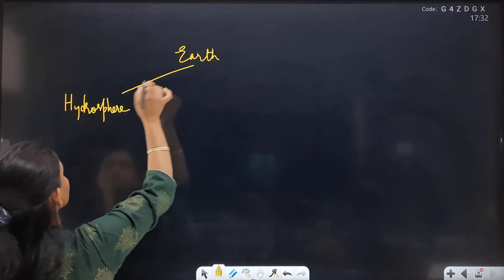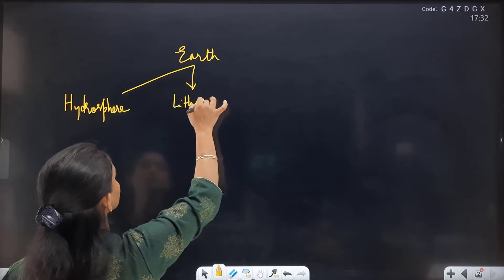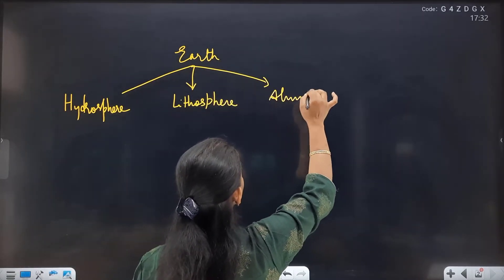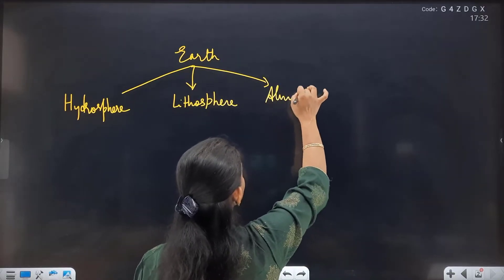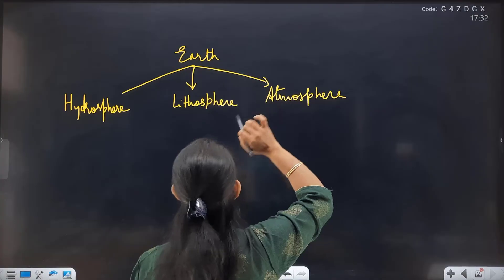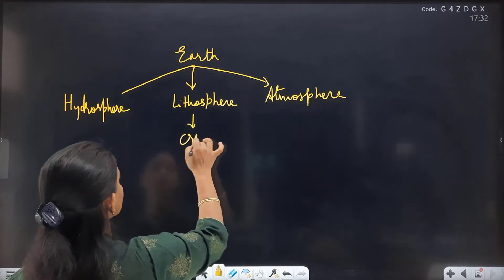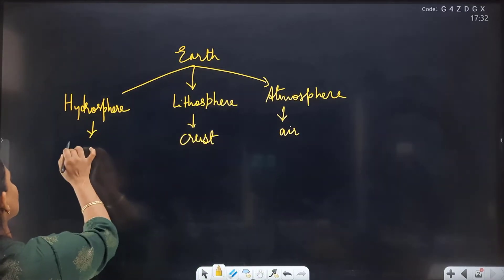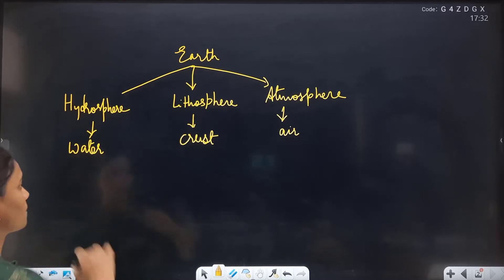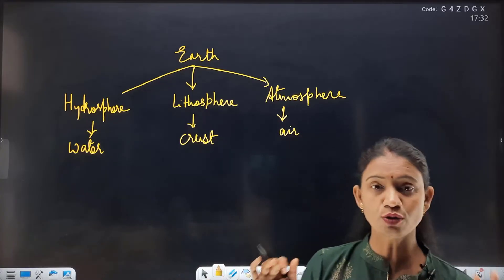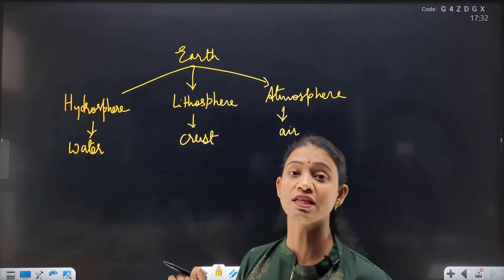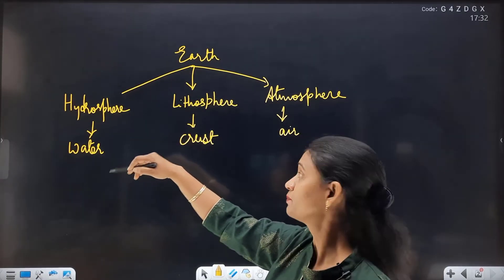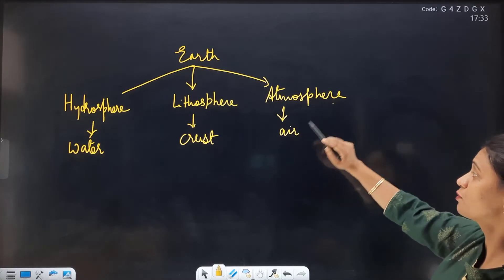These three parts where life is found on Earth are: Hydrosphere, Lithosphere, and Atmosphere. Lithosphere is the Earth's crust. Atmosphere is air. Hydrosphere is water. These three things together support life on Earth overall.